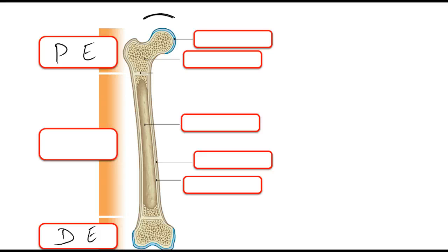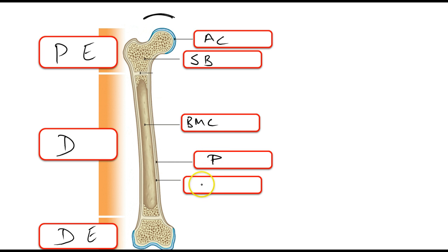The one in the middle is our diaphysis — the shaft of the bone. Here we have the articular cartilage and our spongy bone. Here we have our bone marrow cavity or medullary cavity. Here we have our periosteum, the sheath of the bone. And here we have the compact bone.